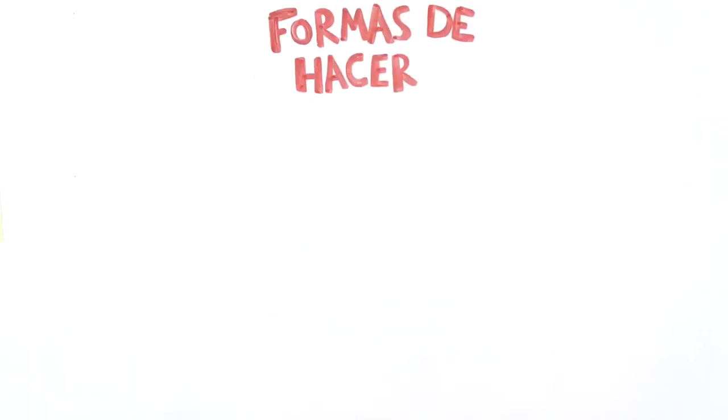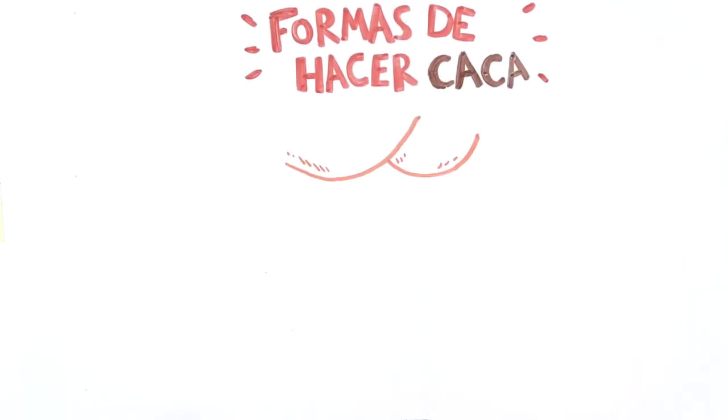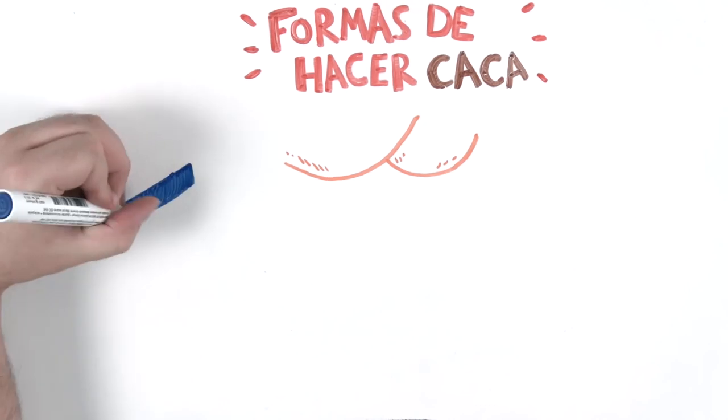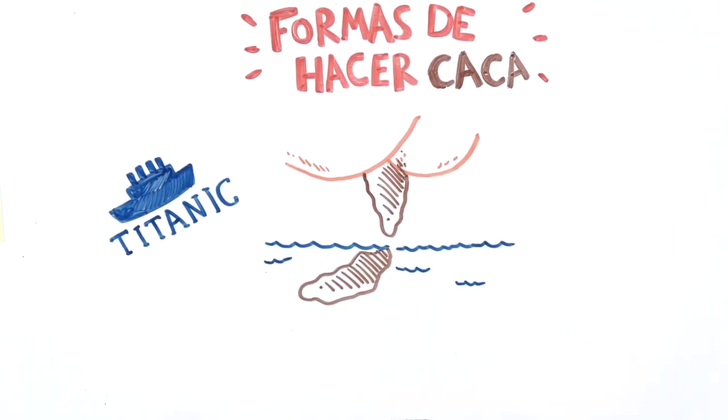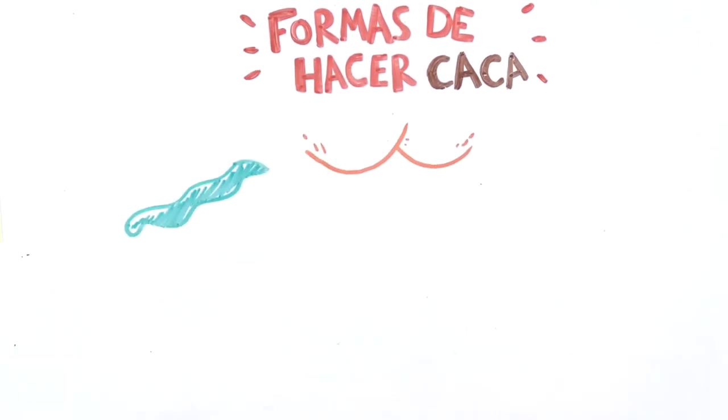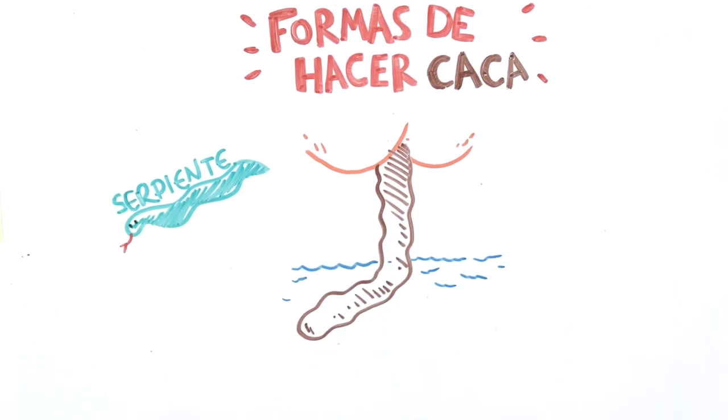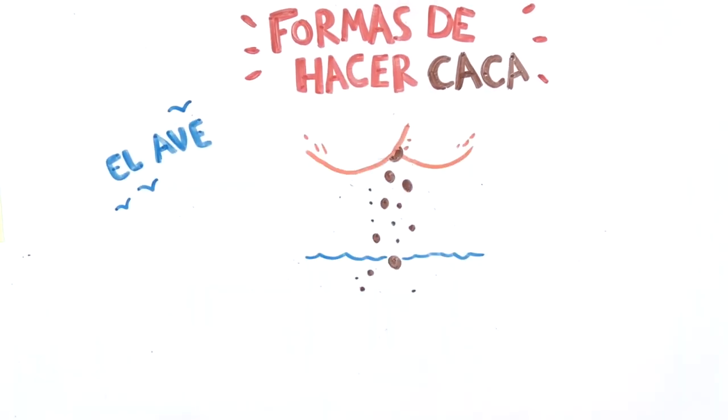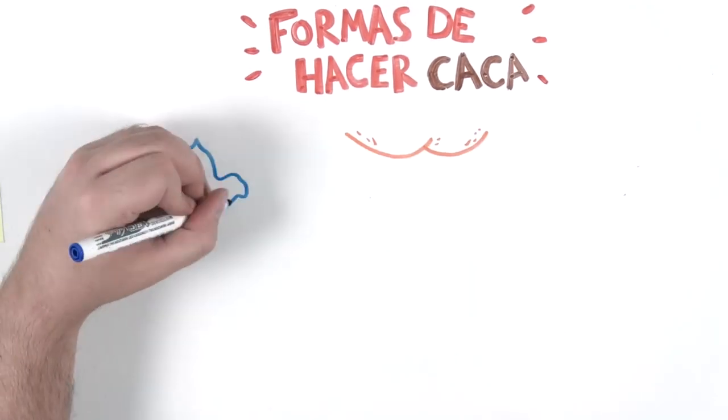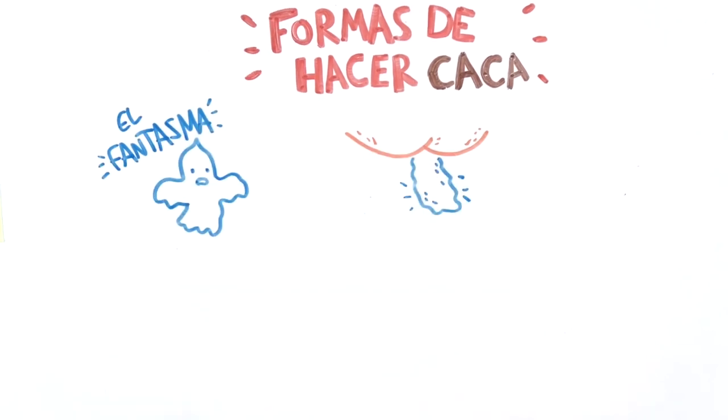Now that we are already sat on the toilet, we are going to explain all the ways to poop. The first one is the Titanic, a crab broken in two parts. Then, the one called snake that can connect your booty with the toilet water, the bird, the rubber ring, and the ghost. This one is a false alarm, and at the end it's just a noisy fart.